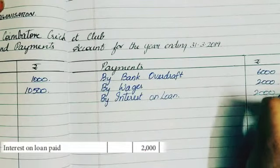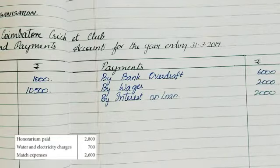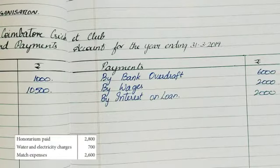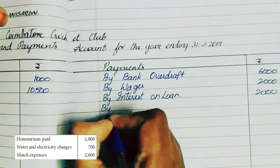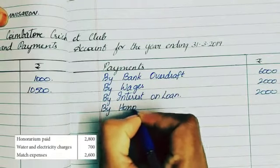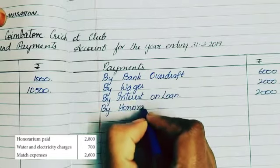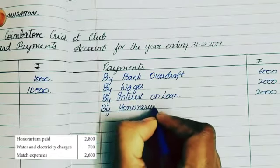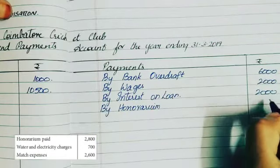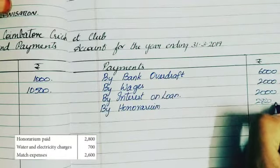Next we have honorarium on the right-hand side of the tabular column. Since it is paid, it goes to the payment side. Write 'By Honorarium' for 2,800 rupees.